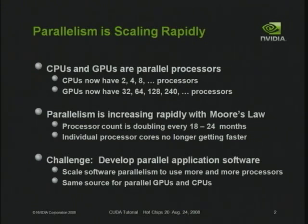As we're going to show you today with CUDA, you can use those thread counts to do general purpose computation. The key challenge with doing computation on a highly parallel machine is dealing with the scalability problem. How do you write a general purpose program where today it runs on a thousand threads, but tomorrow it could run on two thousand threads? The real challenge is how do we develop parallel application software that scales not only with time, but on today's platforms.